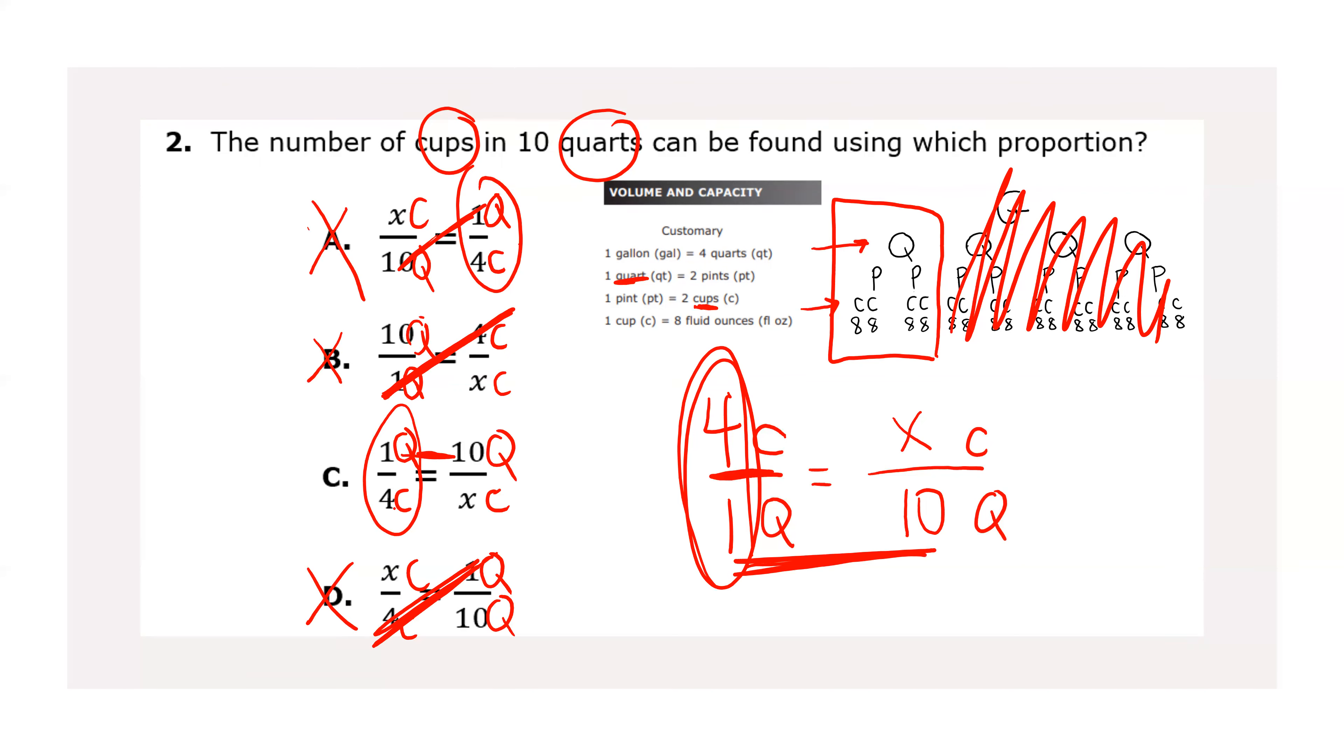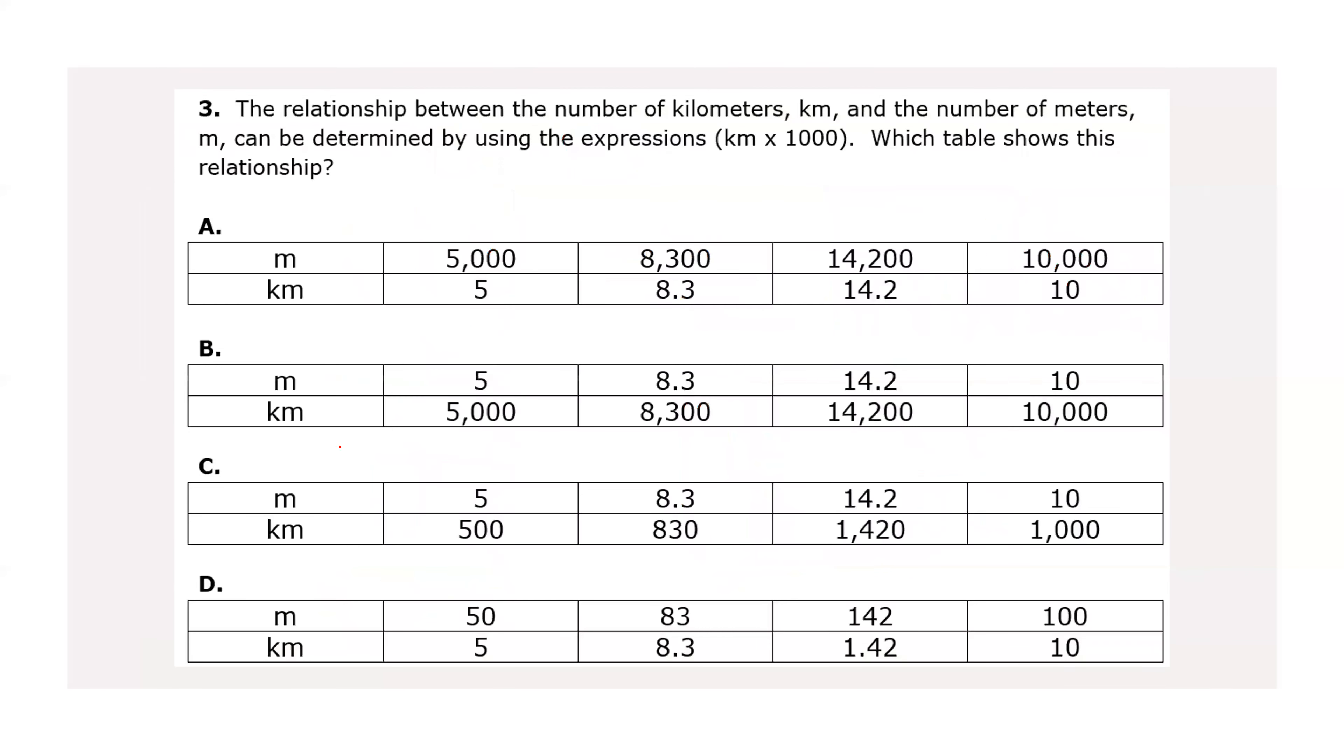So let's check it. One quart is four cups. Ten quarts is X cups. That makes sense. And our labels are correct. Quarts and cups, quarts and cups. So C is our answer. They just wrote their proportion upside down from what I did, which we all know that that's the same thing because of those labelings. They help us.